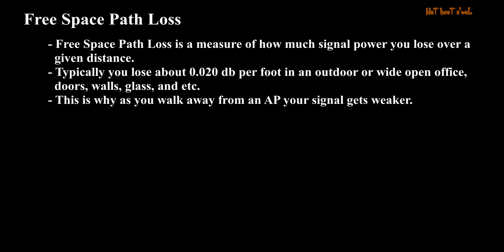Free space path loss is a measure of how much signal power you lose over a given distance. Typically you lose about 0.020 dB per foot in an outdoor or wide open office. Doors, walls, glass, etc. further reduce the signal. This is why, as you walk away from an access point, your signal gets weaker.